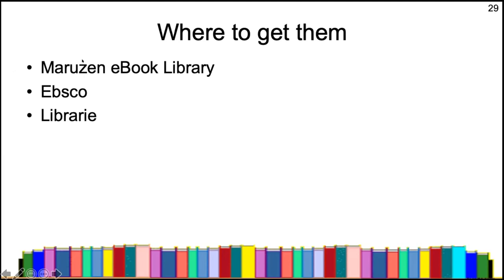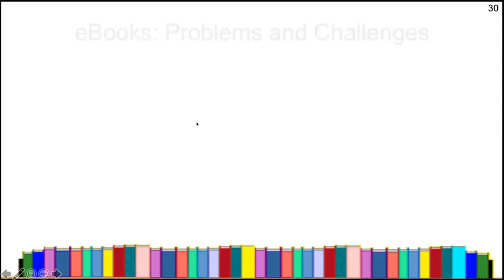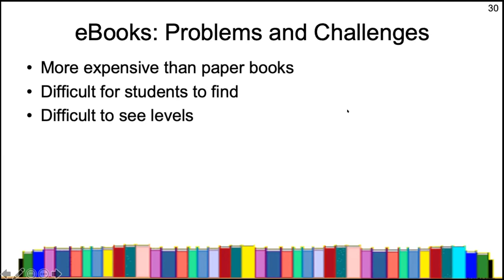Three places I know of that we have been using for ebooks: one is Maruzen's ebook library, another is EBSCO, and another is called LiveLibrary. Maruzen and LiveLibrary are Japanese sites; EBSCO is from the US.